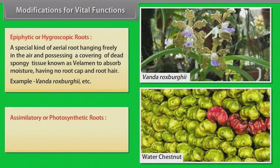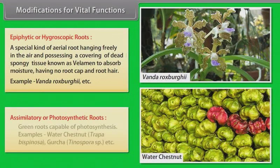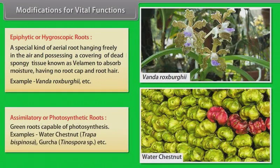Assimilatory or photosynthetic roots: Green roots capable of photosynthesis. Example: water chestnut, Tinospora, etc.